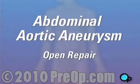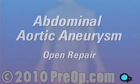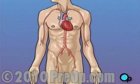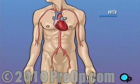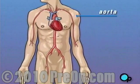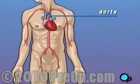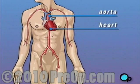Your doctor has recommended that you have surgery to treat an abdominal aortic aneurysm, but what does that actually mean? The aorta is the main blood vessel that carries oxygen-rich blood from your heart to the organs in your body.